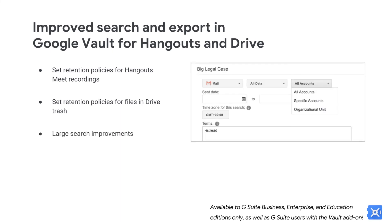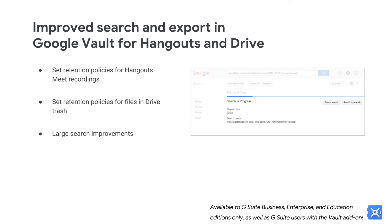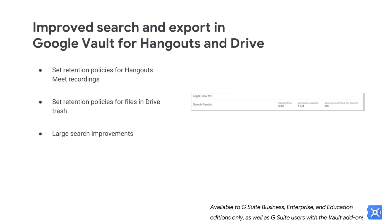We're making the process of searching your entire domain and large OUs easier and more transparent. If a data type supports domain-wide search, you can now select All Accounts to search the entire domain. As Vault processes your large search request, you'll see an activity indicator and the amount of time that has elapsed. You have the option to cancel your search or run another search in a new tab. When your search is complete, you'll see the total time taken, and for Gmail search, the total number of accounts searched and the number of accounts searched per second.